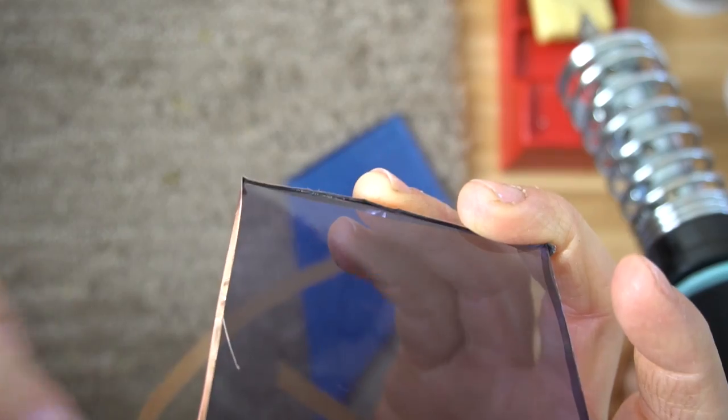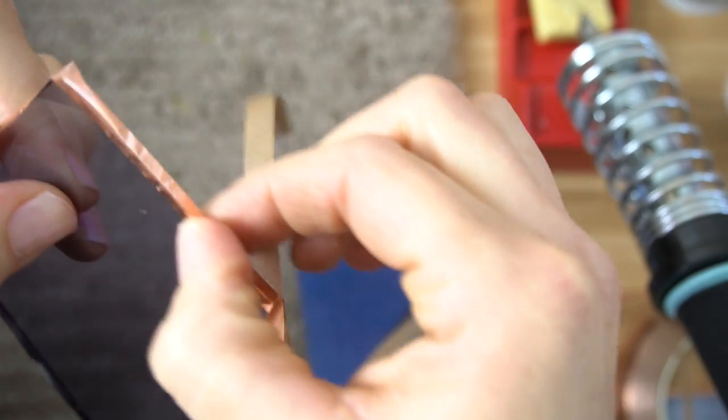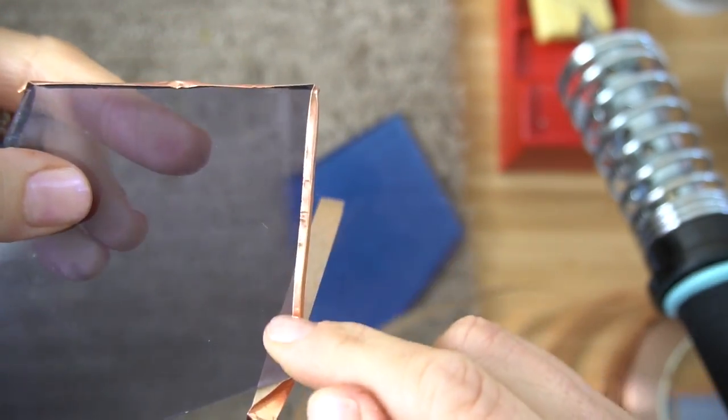After you press it on the side, you want to just press it down on the front and back pieces of the glass. You really want this to be as straight as you can make it.